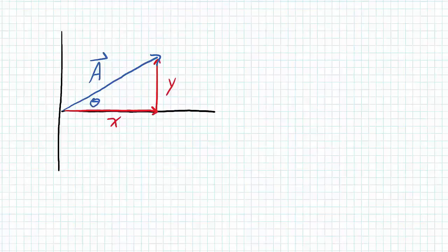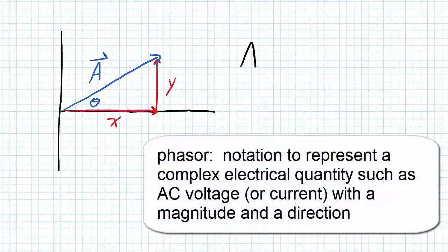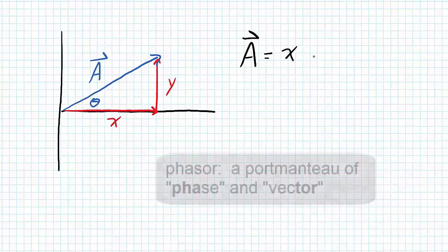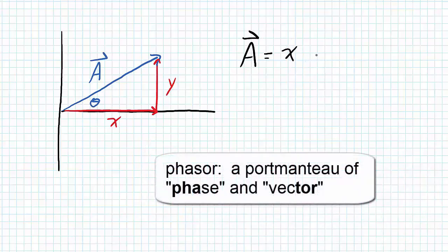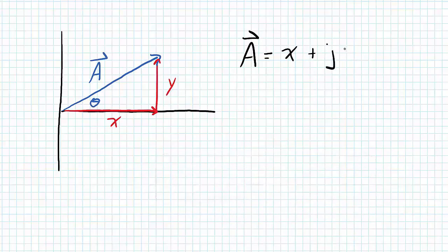So ultimately, when I'm describing one of these vectors or these phasors, I can describe it as having an x component and a y component. Or the x component, I can call that the real component. And to indicate that I've got the y component, I use this j designation which indicates that it's the imaginary part. So I've got this phasor A. That's a complex number made up of an x component and a y component. Now this is the description of the phasor in rectangular coordinates.